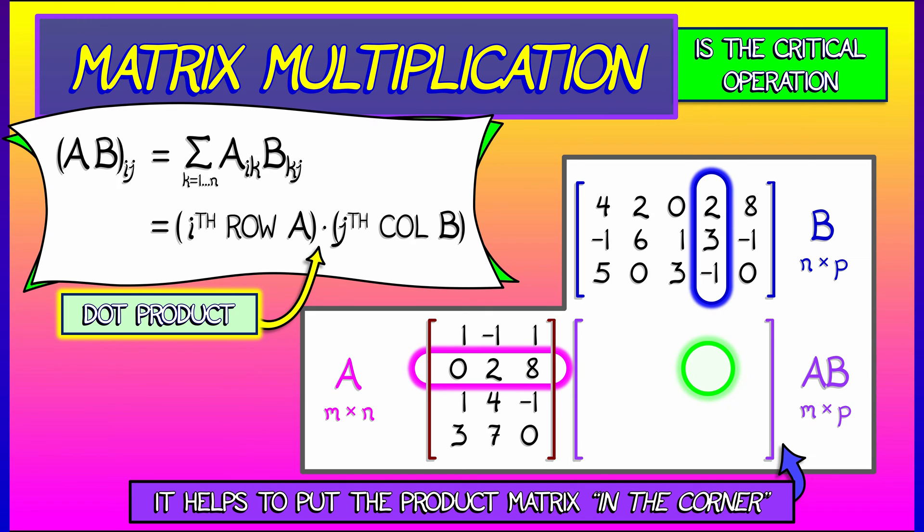In this simple example, that entry is 0 times 2 plus 2 times 3 plus 8 times negative 1. That is negative 2.